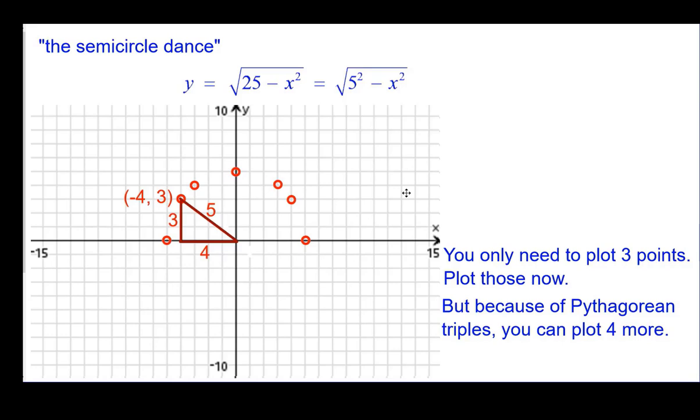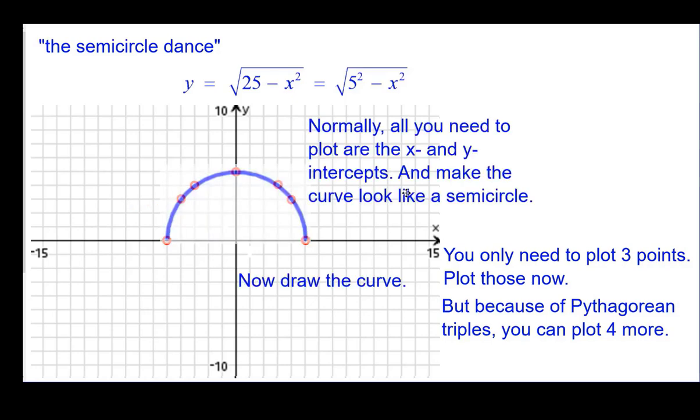Special case, though, for this particular radius. Drawing the curve, we get that nice semicircle. Again, all you need are the x and y intercepts to plot a semicircle and make it look like a semicircle.